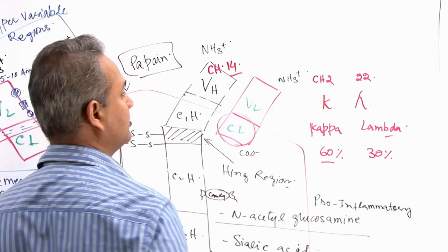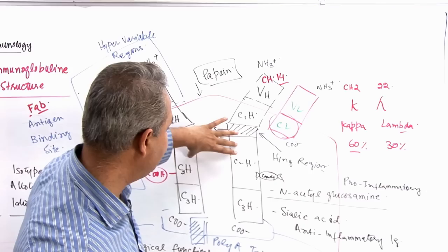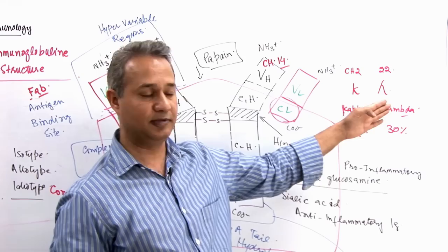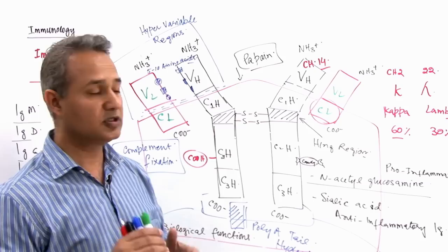In one immunoglobulin, there is going to be one type of heavy chain and one type of light chain. So, kappa or lambda and similarly here, M or D or G or E or A. So, that is very important to recognize.